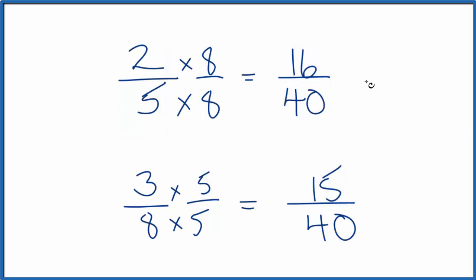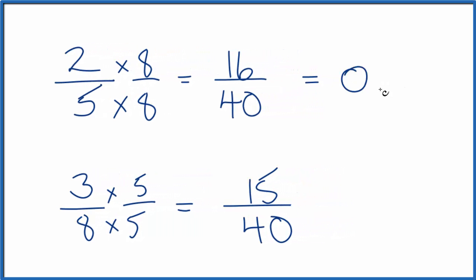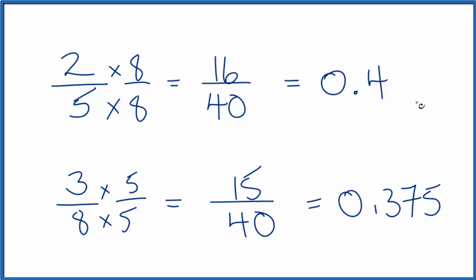So 16 divided by 40, or 2 divided by 5, both of those give us 0.4. 15 divided by 40, or 3 divided by 8, that gives us 0.375. And you could think of this as 0.400.